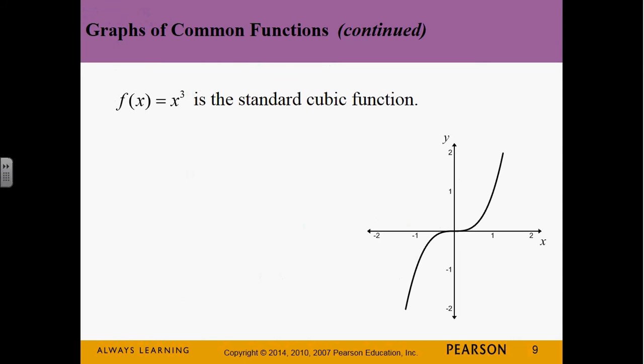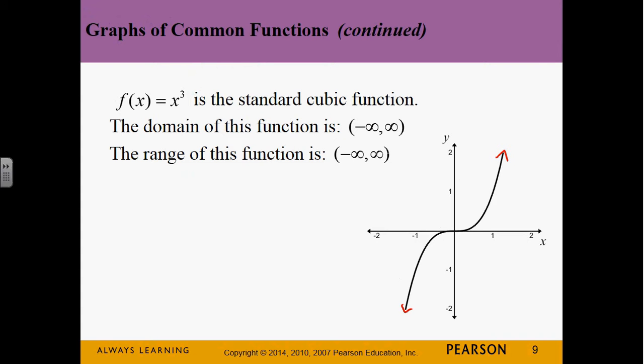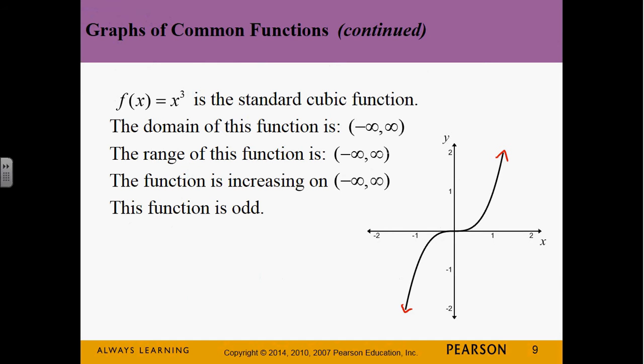The cube function, x cubed, is that squiggly-line shape. The domain is negative infinity to positive infinity, and the range is also negative infinity to positive infinity. It's increasing over the entire function — even though it looks like it has a constant section in the middle, it doesn't. It's always gradually increasing. It's an odd function with origin symmetry, and it has the same values in the first and third quadrants. x cubed has an odd exponent, so it's an odd function.